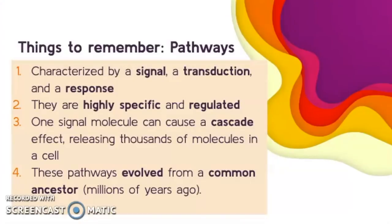Signal transduction pathways are characterized by a signal, a transduction, and a response. A signal could be something generated in a unicellular organism, or it could be something as part of a multicellular signaling pathway. Cell signaling pathways are highly specific and regulated, and one signal molecule can cause a cascade effect, releasing thousands of molecules in a cell. These pathways evolved from a common ancestor millions of years ago. The response could be something like gene expression, production of a hormone, suppression of genetic activity, or even apoptosis.